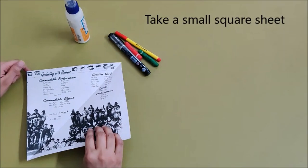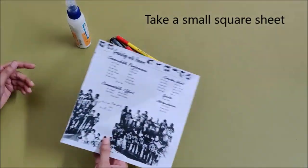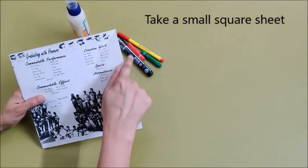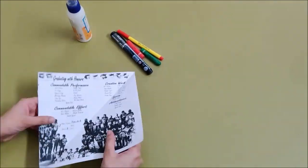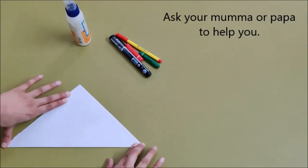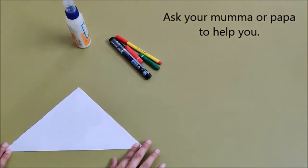To make parrot finger puppet, take any rough sheet. Cut it into square. See, it is a square sheet. Now fold it into half like this. Press it nicely.